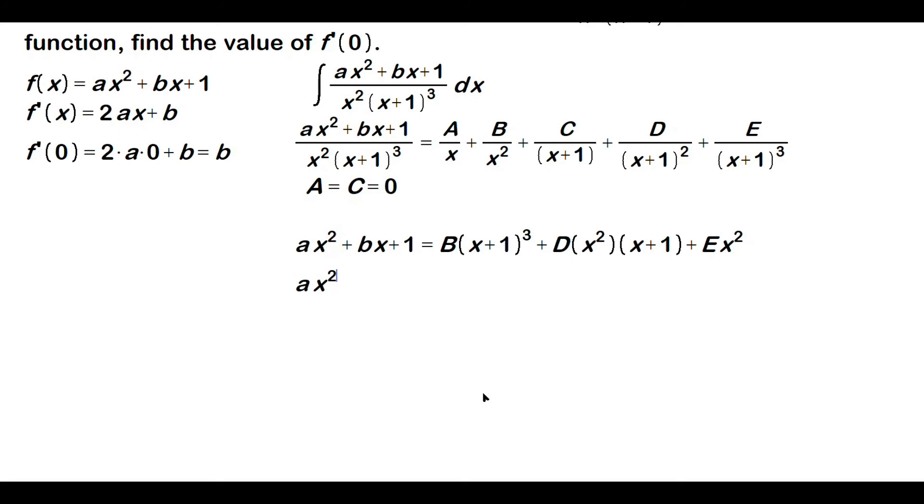Distribute and clean up a little bit. So ax squared plus bx plus 1 is equal to capital B. Expand the expression there. So it's going to be x cubed plus 3x squared plus 3x plus 1 by Pascal's triangle.